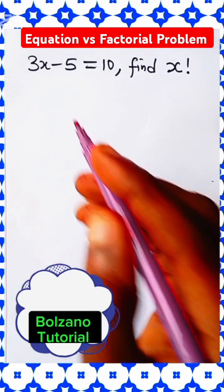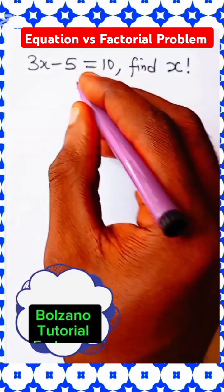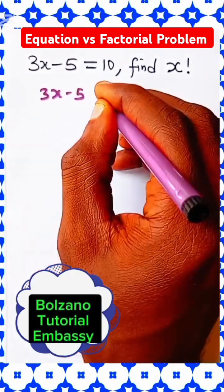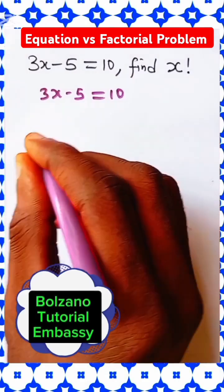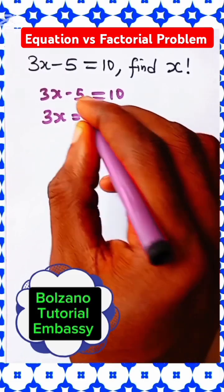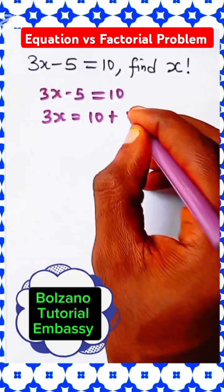x factorial. Alright, the first step, let's simplify this. 3x minus 5 is equal to 10. So, collecting like terms, that means 3x is equal to 10, minus 5 comes this way, becomes plus 5.